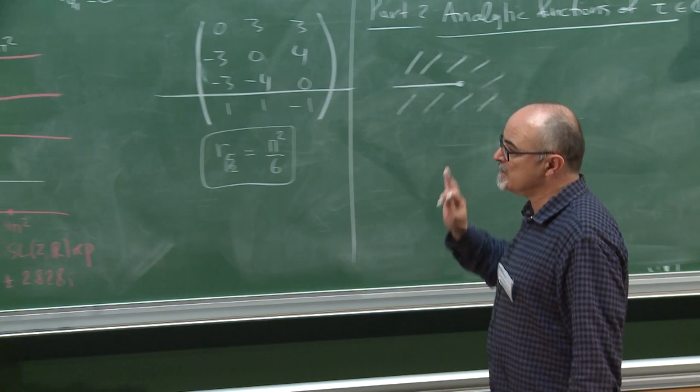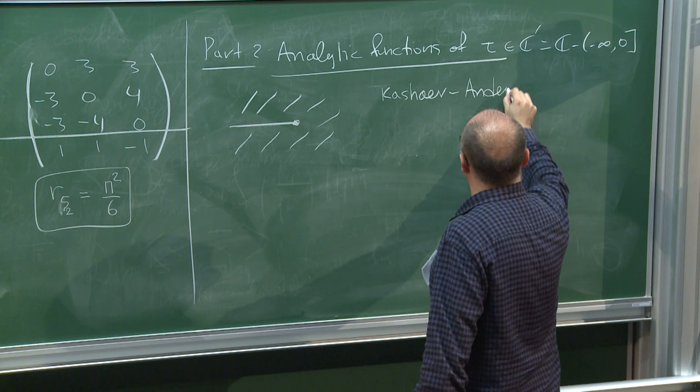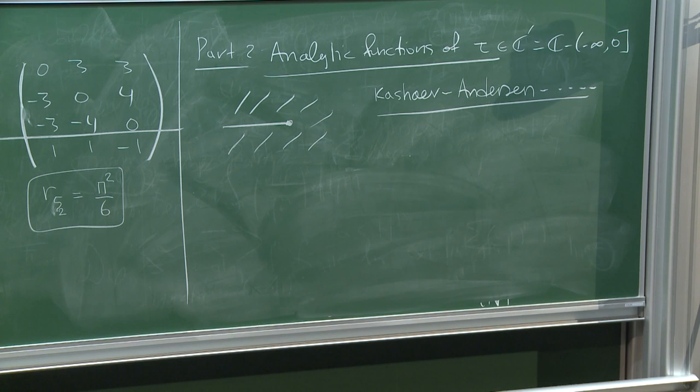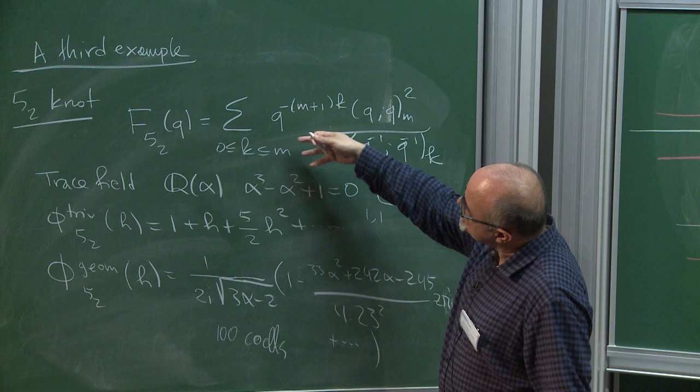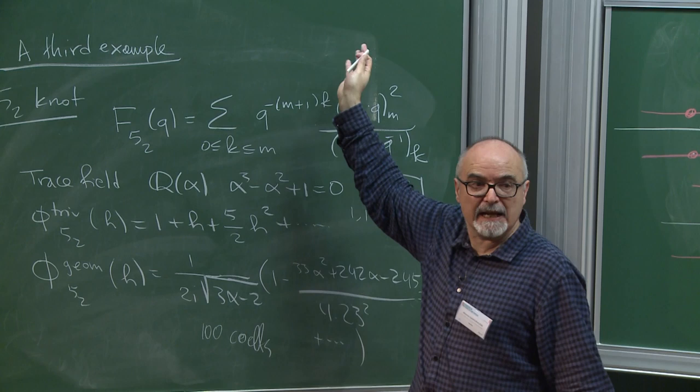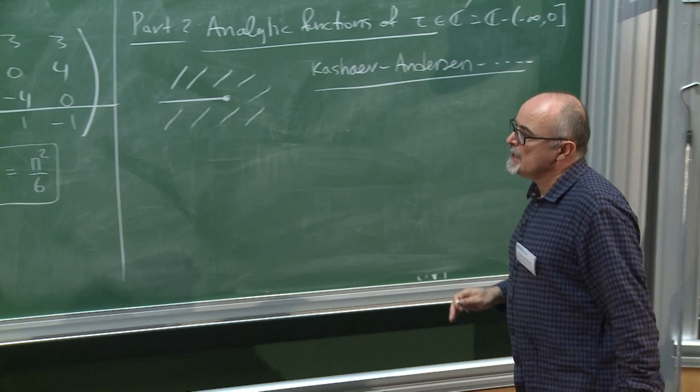These theories were developed by Kashaev, Andersen, and several collaborators. The building block for the state sums is a special function. For a general knot the formula is not too bad: you always do a finite-dimensional sum of ratios of quantum factorials. In the new theory you do a finite-dimensional integral, and the building block is not the quantum factorial but Faddeev's quantum dilogarithm.